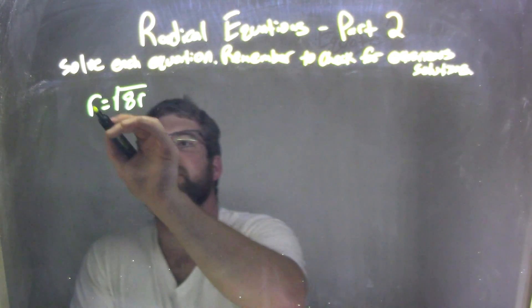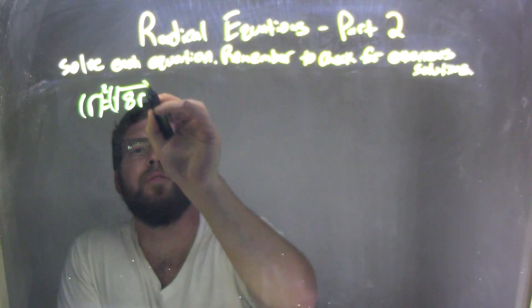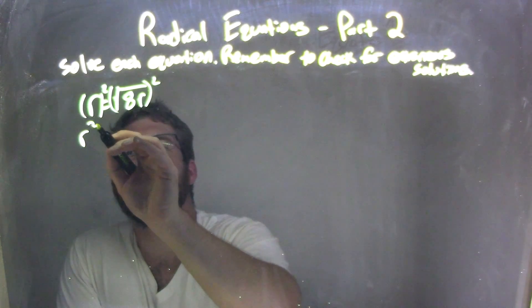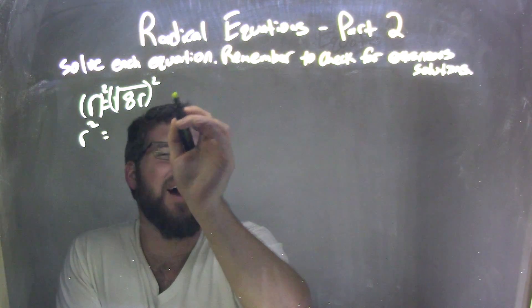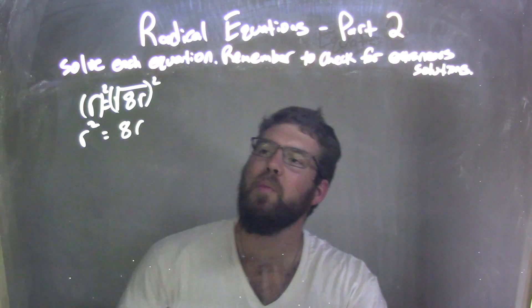I'm going to square both sides here. Let's square both sides. r squared equals the square root of 8r. From there,